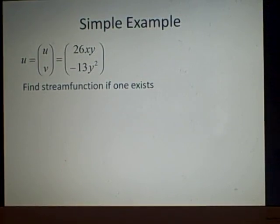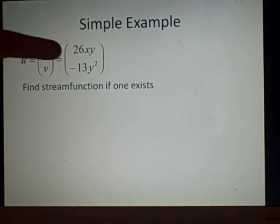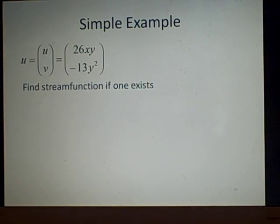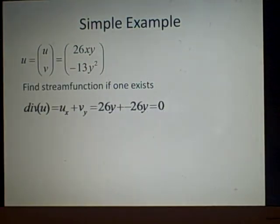First, to see if it exists we need to check that the divergence is zero. So we need to differentiate this with x which will give us 26y, and then we differentiate this with y which will give us minus 26y as the two comes down, and we have to add them together. That will give us zero, so the divergence does equal zero. There should be a stream function.